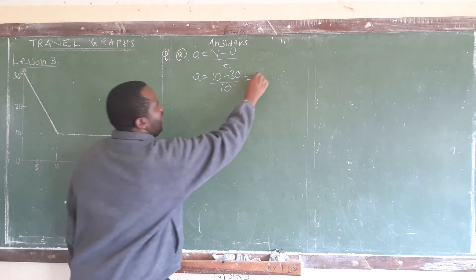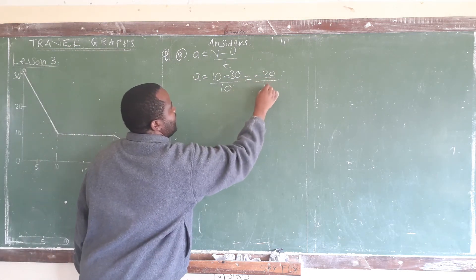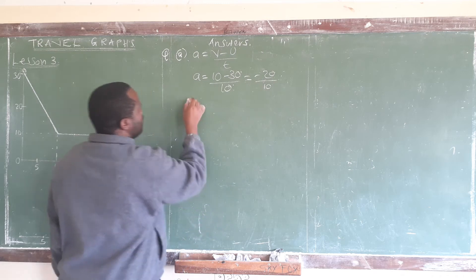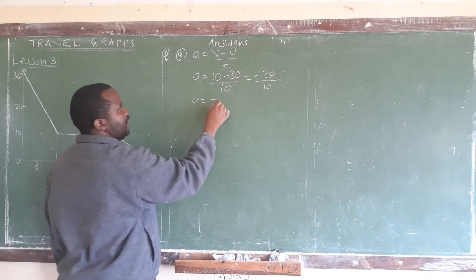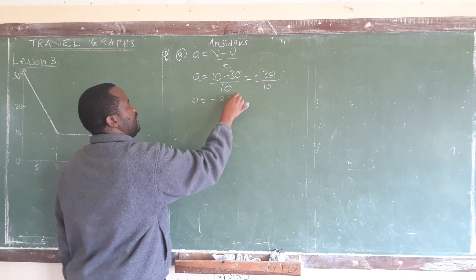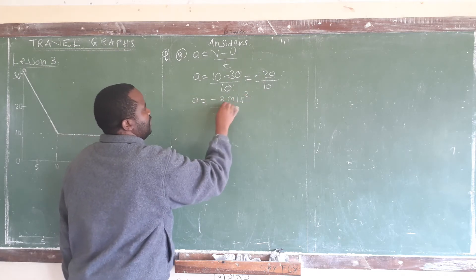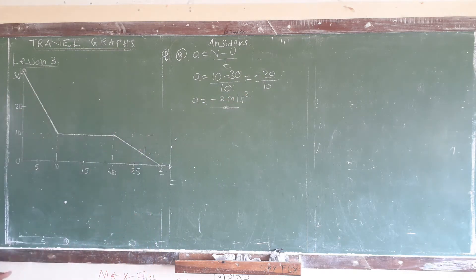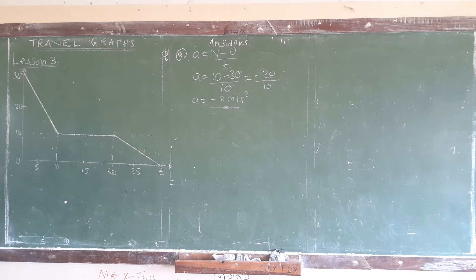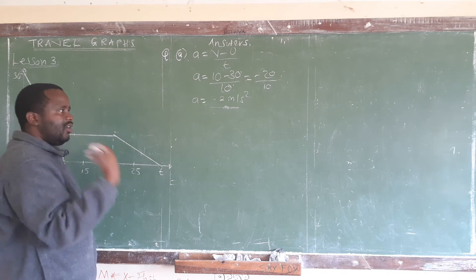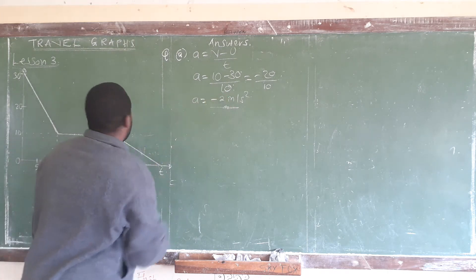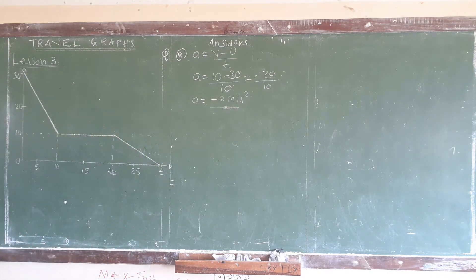So we get 20 divided by 10, giving us acceleration equal to negative 2 meters per second squared. The negative sign simply means that this is not acceleration but deceleration. But if you are asked to compute the acceleration, that is the answer we are going to give.